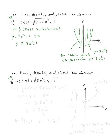Let's do the next example: find, describe, and sketch the domain of i(x,y) = √(5x² - y + 1). The domain will be all points (x, y) such that 5x² - y + 1 ≥ 0. This means -y ≥ -5x² - 1, and dividing both sides by -1 (reversing the inequality), we get y ≤ 5x² + 1.